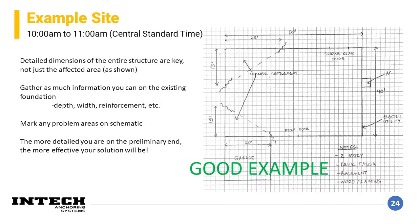A good example of a site schematic clearly dimensions the entire building footprint, marks utilities and doorways, and clearly indicates the affected area. Whenever you're detailed like this on the front end of a project, it makes coming up with a pile plan and load estimation much simpler and much more accurate.